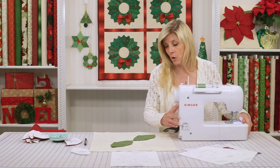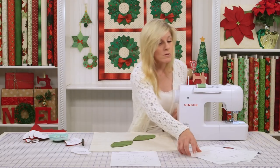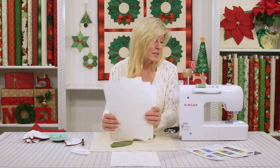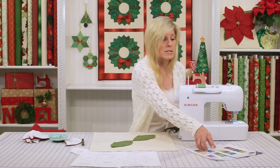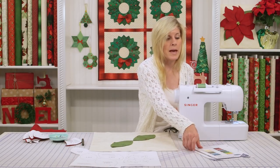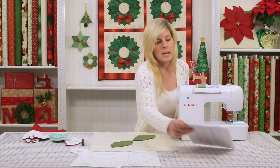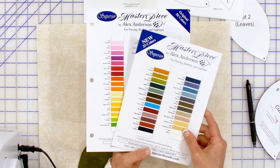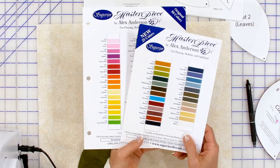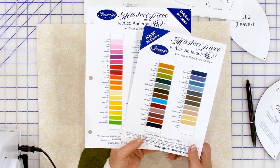Now I just chose a Masterpiece coordinating thread in green. If you do not have the Masterpiece color cards, there's 75 beautiful colors from Masterpiece. That's from Superior Threads. They're 100% cotton and they're 50 weight Egyptian cotton. I love them. 600 yards on a spool. That's a lot of thread.